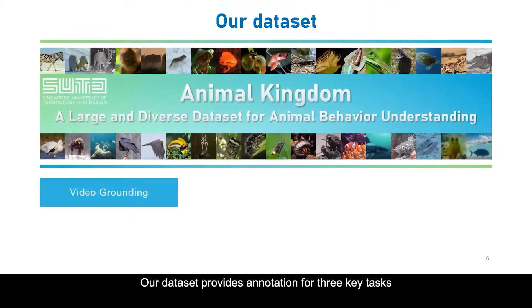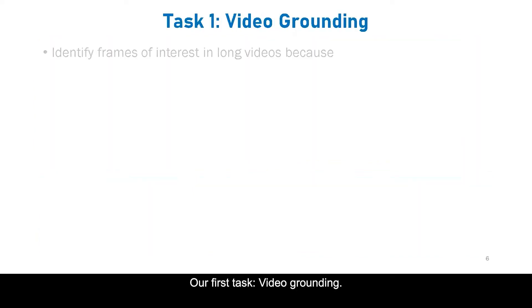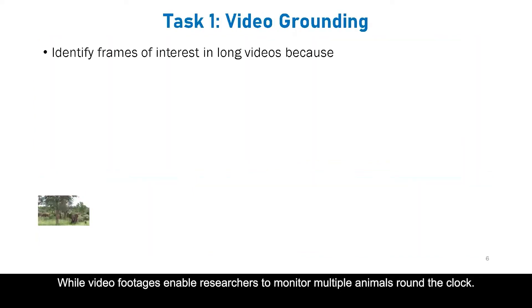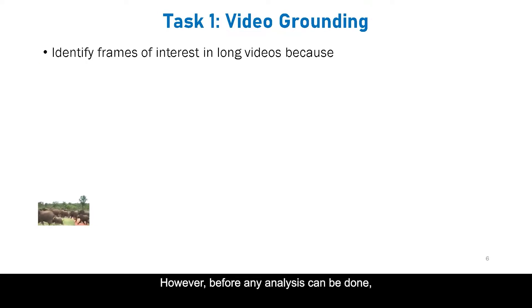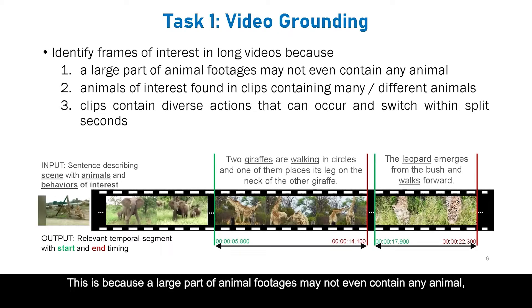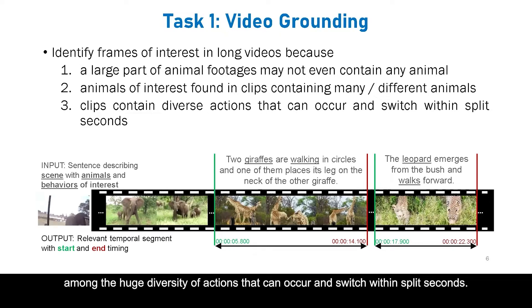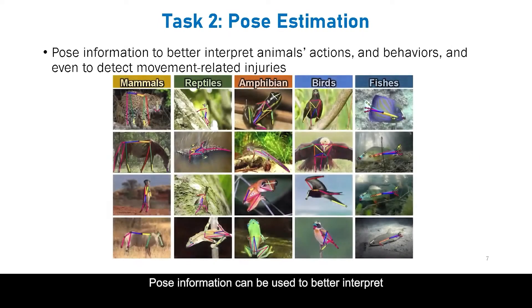Our dataset provides annotation for three key tasks important for animal behavioural analysis. Our first task is video grounding. While video footage enables researchers to monitor multiple animals around the clock, before any analysis can be done, identifying the frames of interest is challenging. This is because a large part of animal footage may not even contain any animals, or researchers could be interested in specific actions among the huge diversity of actions that can occur and switch within split seconds. Our second task is pose estimation. Pose information can be used to better interpret animals' actions and behaviours, and even detect movement-related injuries.